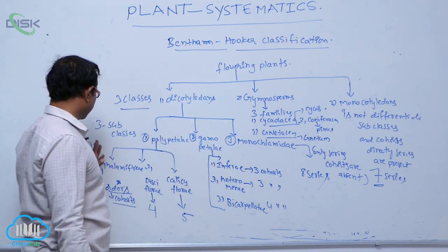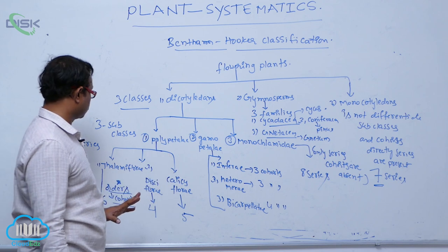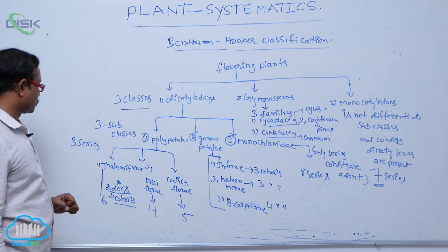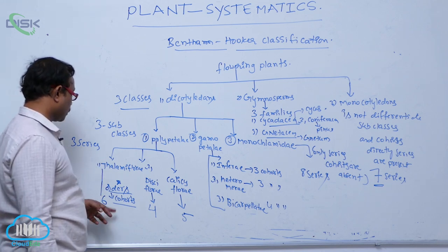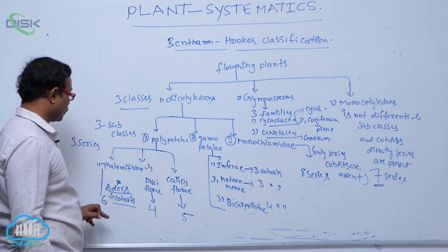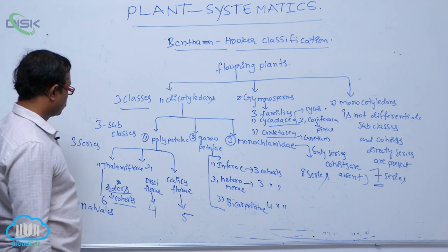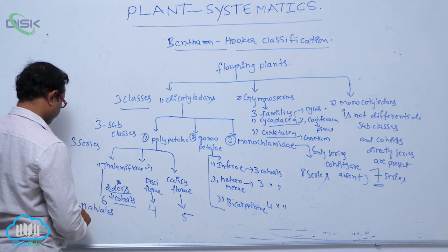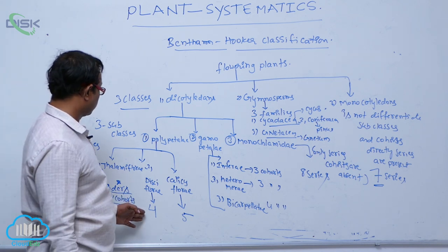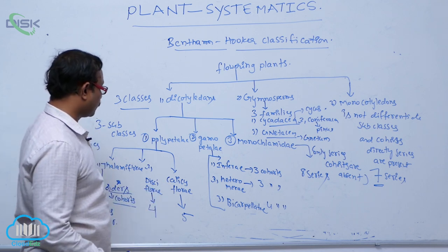In Polypetalae, again divided into three series: Thalamiflorae, Disciflorae, and Calyciflorae, based on the thalamus shape. These are divided into orders — according to Bentham and Hooker, they are known as cohorts. Total six cohorts are below Thalamiflorae. The first order is Malvales. Disciflorae has four cohorts. Calyciflorae has five cohorts.